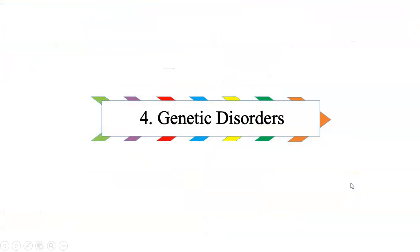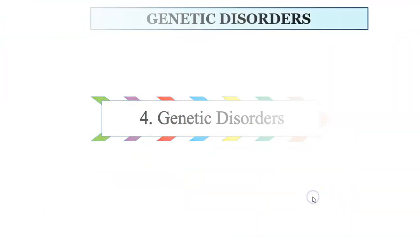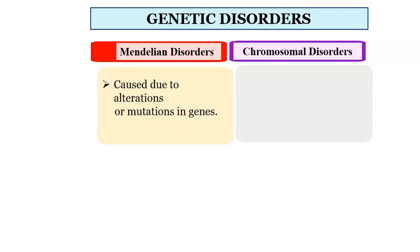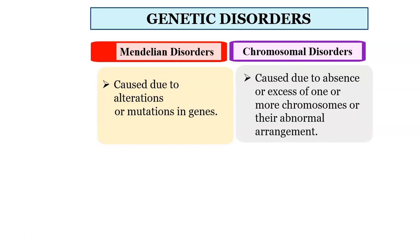Now let us discuss genetic disorders, which are of two types: Mendelian disorders and chromosomal disorders. Mendelian disorder is caused due to alteration or mutation in a single gene — a point mutation. Whereas chromosomal disorder is caused due to the absence or excess presence of an entire chromosome. Diseases under Mendelian disorders include thalassemia, sickle cell anemia, color blindness, hemophilia, and phenylketonuria. Chromosomal disorders include Down's syndrome, Turner's syndrome, and Klinefelter's syndrome.